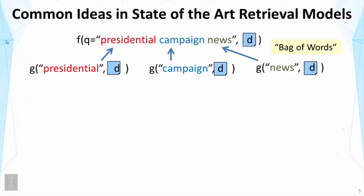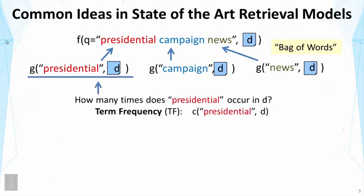Inside these functions, we see a number of heuristics used. So for example, one factor that affects the function G here is how many times does the word presidential occur in the document. This is called a term frequency, or TF. We might also denote as C of presidential and D. In general, if the word occurs more frequently in the document, then the value of this function would be larger.